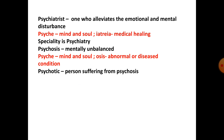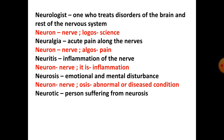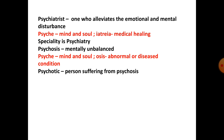Next word we have: psychosis. Jab koi insaan mentally unbalance ho jaata hai. Neurosis aur psychosis mein difference hai. Neurosis kya hai? Emotional or mental disturbance — aap emotionally or mentally thoda disturbed ho, aap paagal nahi ho. Lekin psychosis jo hai woh extreme version hai — aap paagal hone lagte ho. Tabi toh psychiatrist ki zaroorat padti hai. Psyche ka matlab hai mind and soul, aur osis ka matlab hai abnormal or diseased condition. Aur psychotic is the person suffering from psychosis.